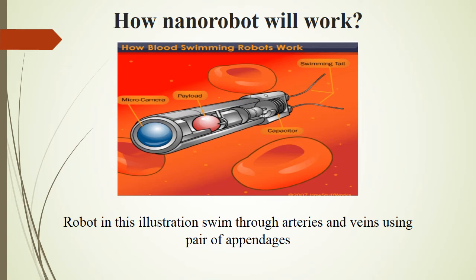Now in this slide we look at how nanorobots will work. Doctors can keep track of the nanorobots with ultrasonic signals. As seen in this figure, a robot is swimming through arteries and veins with a pair of appendages at the end. Nanorobots will be detected by MRI signal devices, radioactive dye, and X-ray radio waves to confirm that they have reached their destined path.